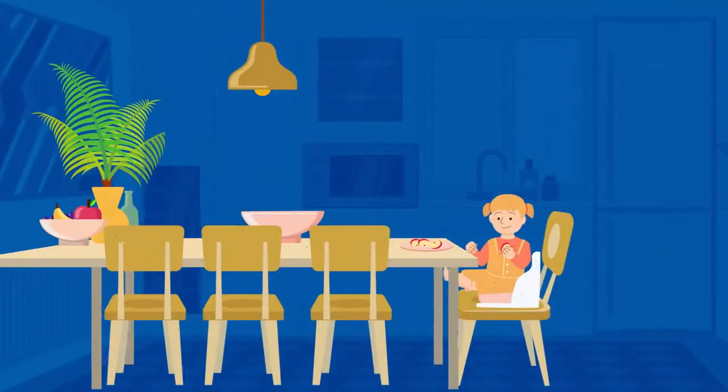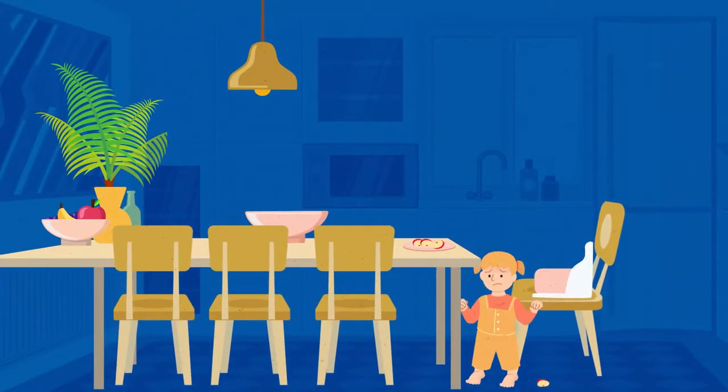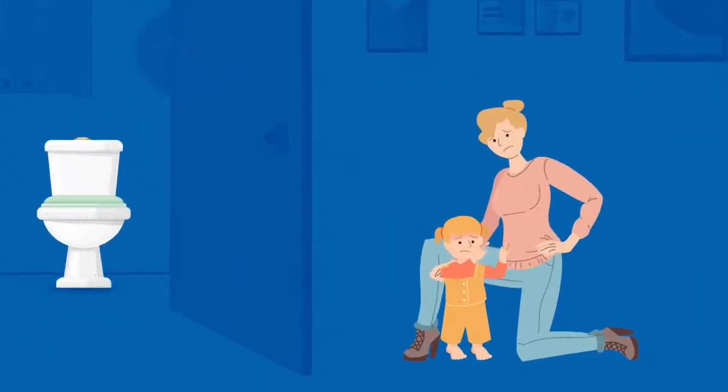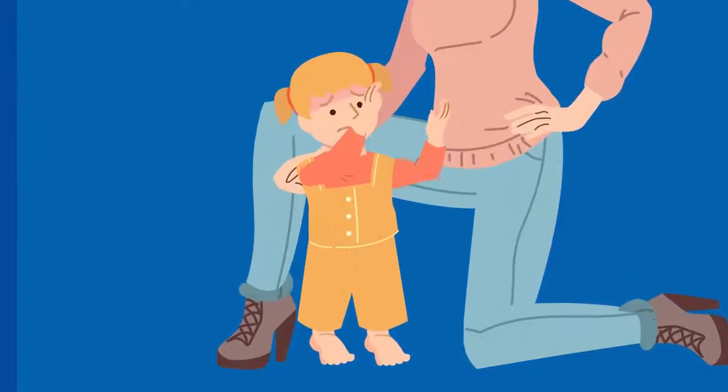Kidney reflux, also known as vesicoureteral reflux or VUR, is one of the most common congenital urinary defects in children. 1% of all children in the US will suffer from it at some point. It is especially common in young girls.